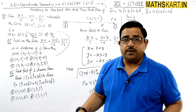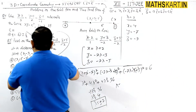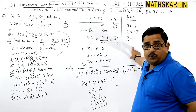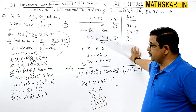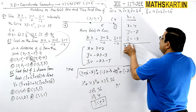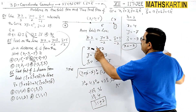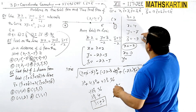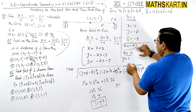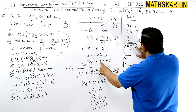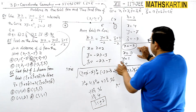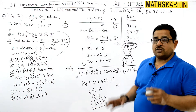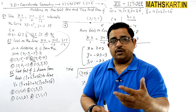Otherwise, for lambda = -2, which would give a multi-correct option scenario. For lambda = -2: x = -2 + 2 = 0, y = -2(-2) - 3 = 4 - 3 = 1, z = -2(-2) - 5 = 4 - 5 = -1. So the point is (0, 1, -1). This point was not given as an option because the question had a single correct option format. But it was geometrically possible — it could have been there.